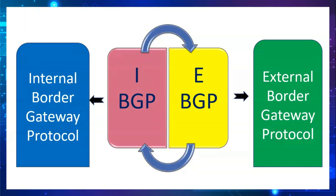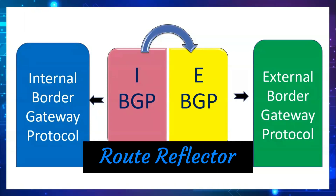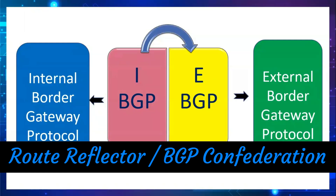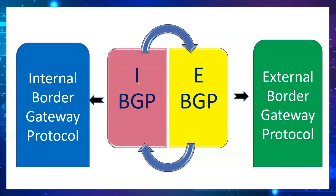EBGP plays between two different AS — it is used to exchange routing information between two different autonomous systems. Generally EBGP is used in ISPs, while IBGP is used individually within an organization or internal LAN. IBGP requires a full mesh topology, and if that is not present, we need to use route reflector configuration to achieve full mesh for IBGP. IBGP does not have a loop prevention mechanism by default, so we need the split horizon rule to overcome this.